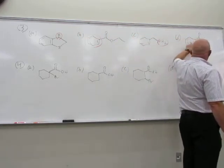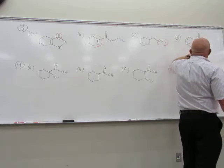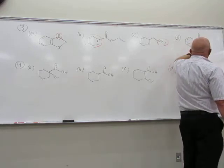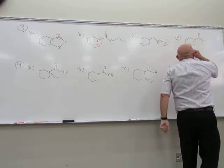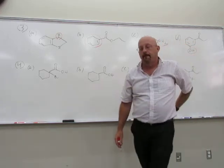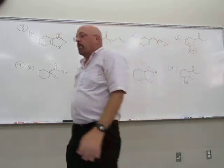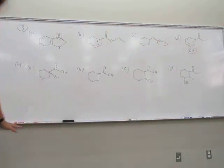Here we have hydrogens on carbons and a hydrogen on oxygen. You're more acidic on the oxygen than on the carbon — that's your periodic trend. So we've found the most acidic hydrogen within each molecule. Now we can start comparing molecules.